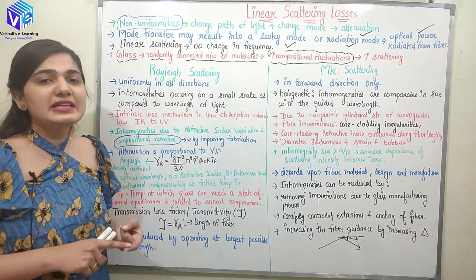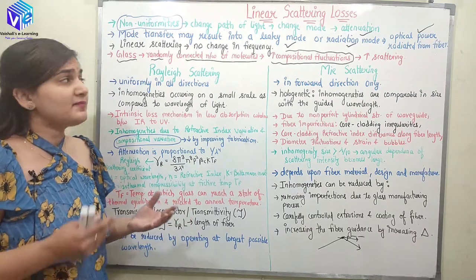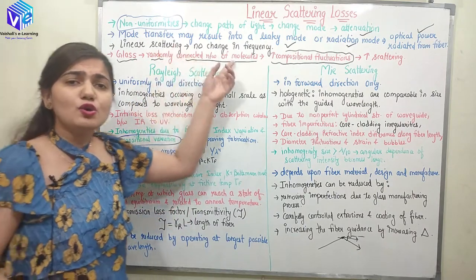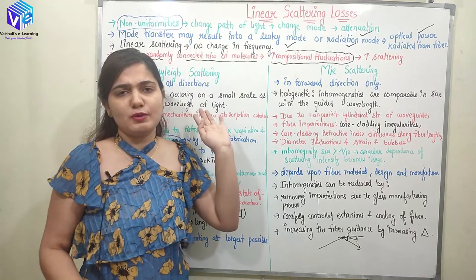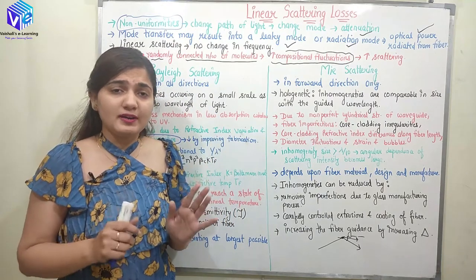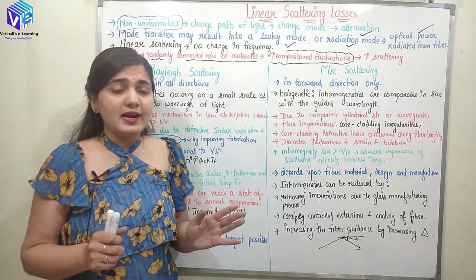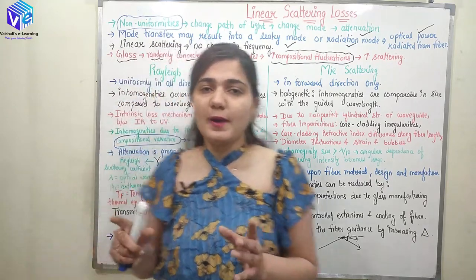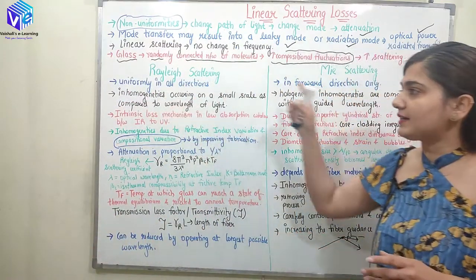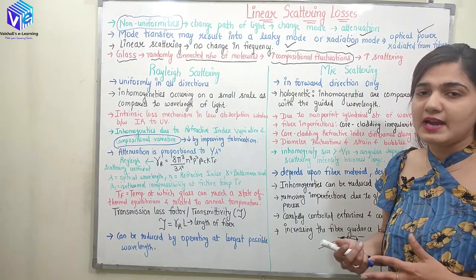Now coming to linear scattering. What is linear scattering? Linear scattering is scattering in which there is no change in frequency. This is a very important term to remember. We are going to talk about two types of linear scattering: Rayleigh scattering and Mie scattering.